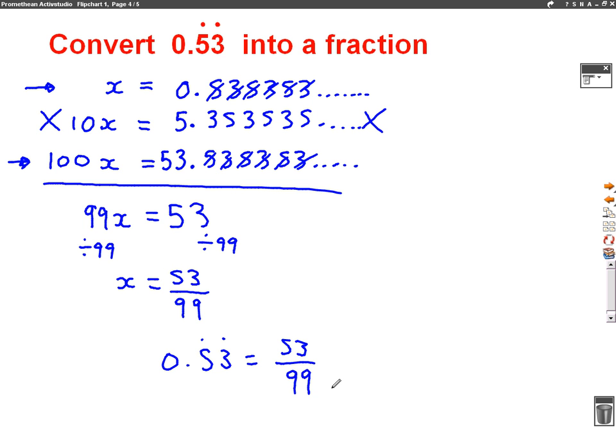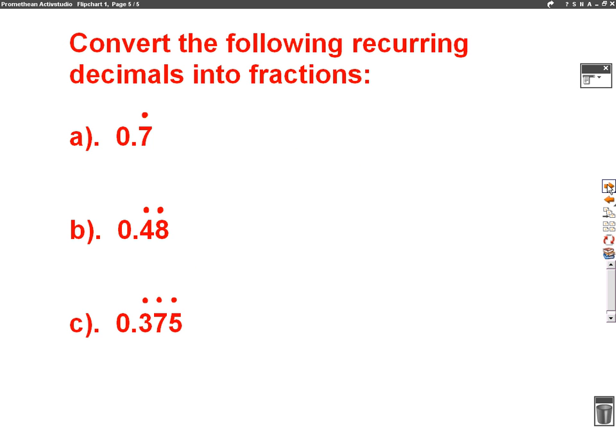So we've gone through a couple of examples there. I hope that comes clear. I mean, the method's always the same. You're trying to make the decimals line up so that you can take them away from each other. I have a couple of practice questions here for you to have a go at. Part C is a little bit harder than the two examples we've done, so it'll be interesting to see if you can have a go at that one. Good luck.